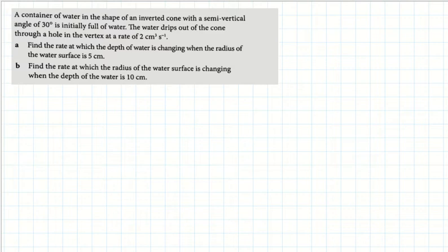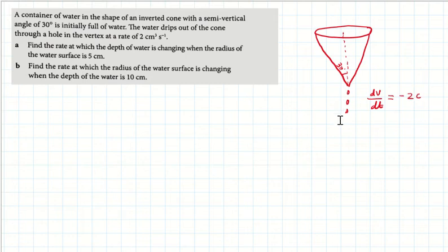Let's draw a diagram. You have been given an inverted cone. The semi-vertical angle is the angle that the slant height makes with respect to the vertical line. The water is dripping out at a rate of 2 cm³ per second.